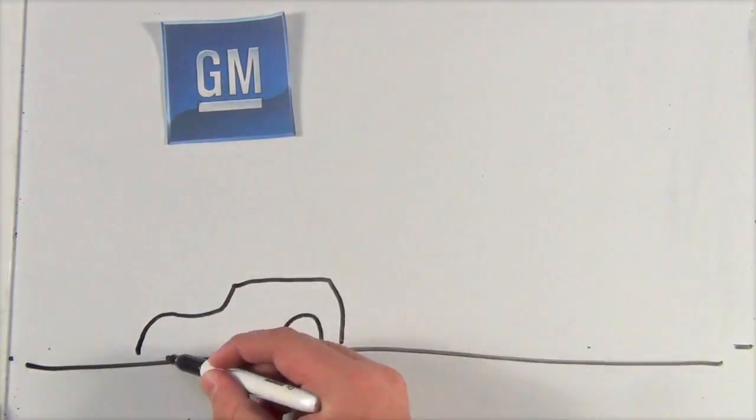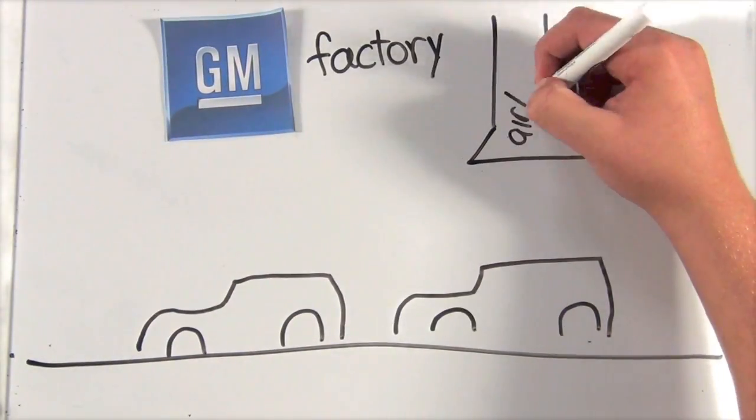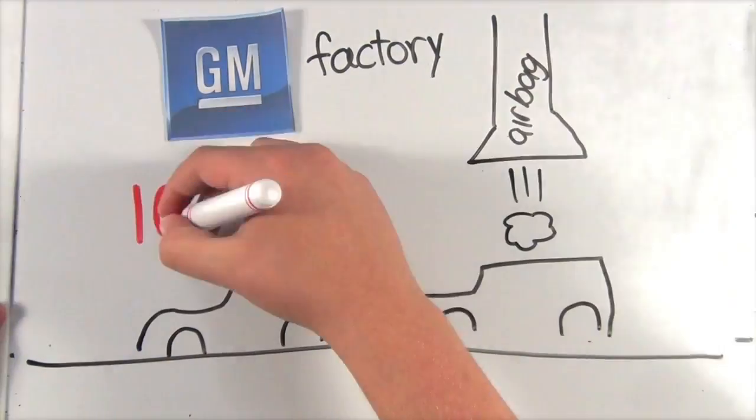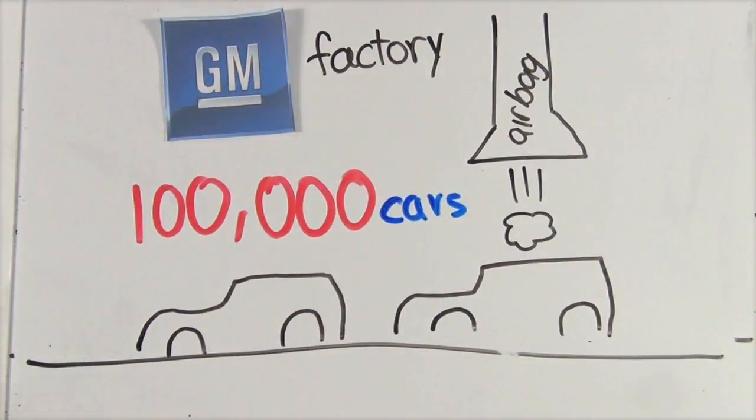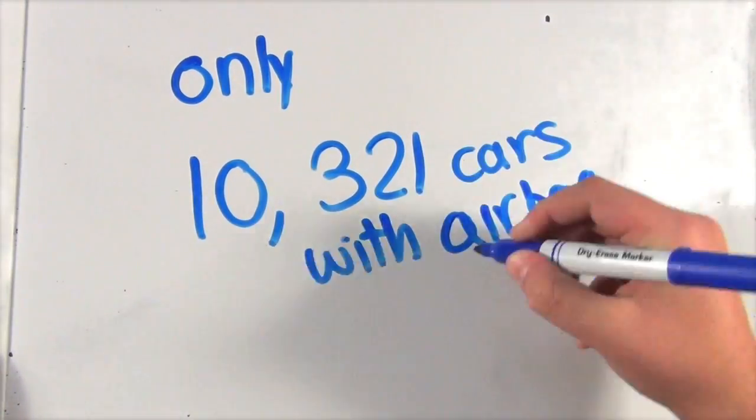After all, General Motors made a plan to put their working airbags into 100,000 cars and sell them to the public. This was such a terrible mistake as only 10,321 cars were sold with airbags.